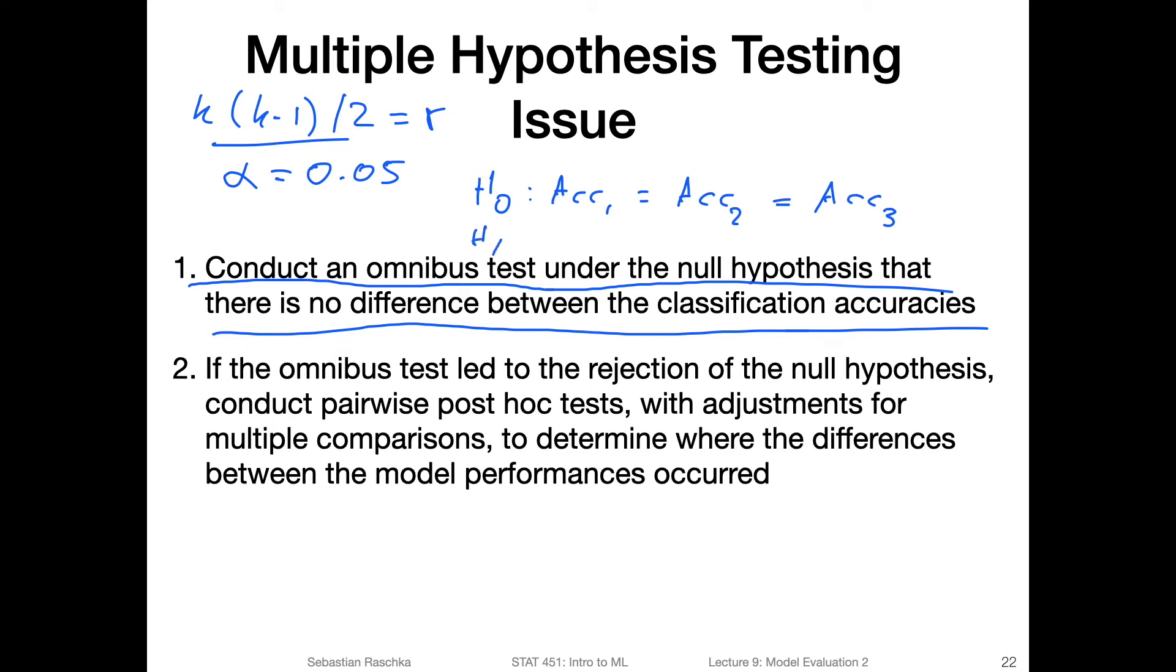And the alternative hypothesis would be that the performances are not equal. However, if we reject the null hypothesis and find that not all the accuracies are equal, we still don't know which models differ. So we can then follow up with these pairwise comparisons post hoc. But we have to be careful to make adjustments for the multiple comparison, because otherwise we would have a very large error rate of falsely rejecting null hypotheses, just by increasing this error rate which can be up to r times alpha.